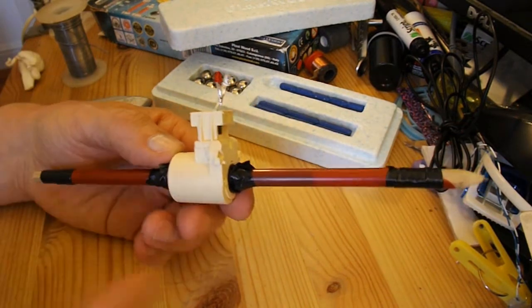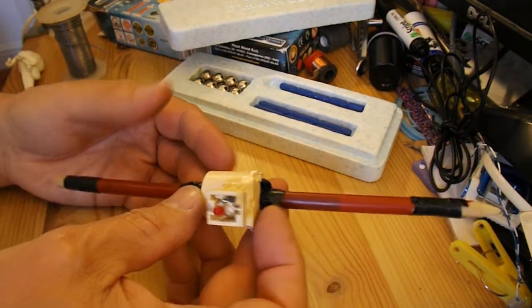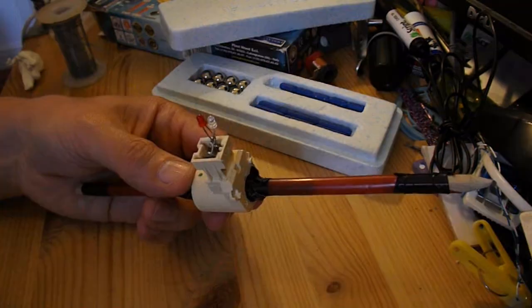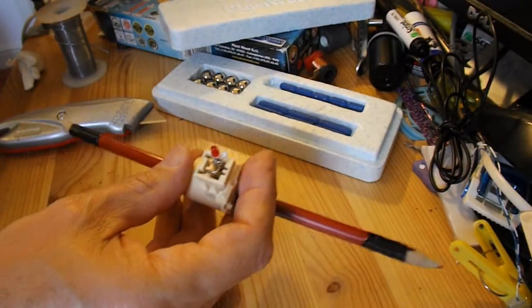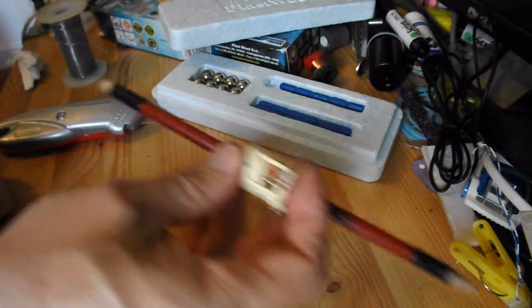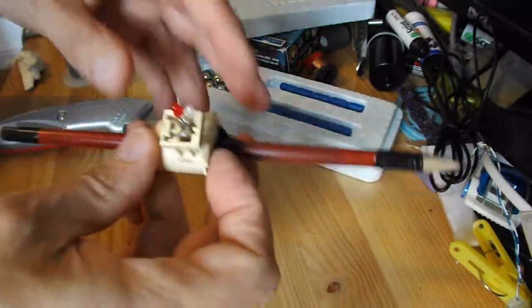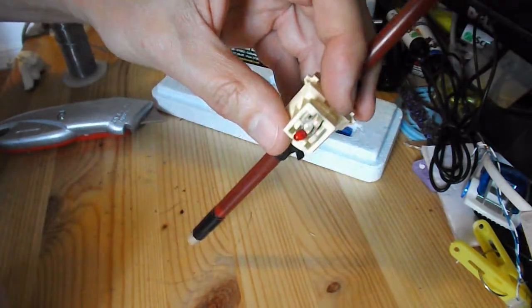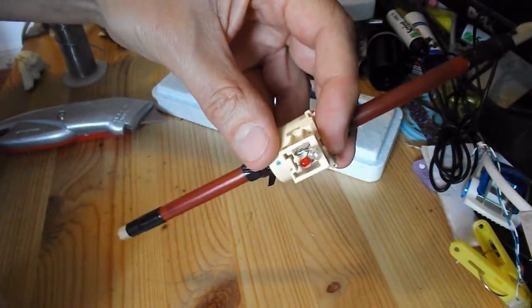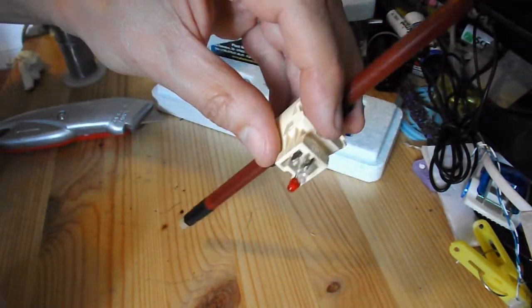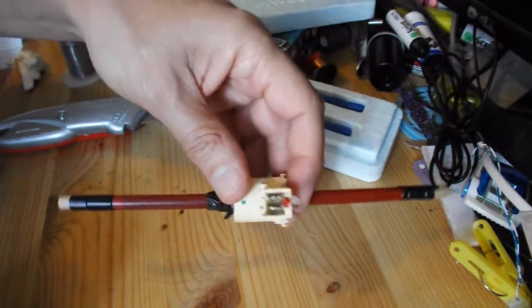OK, there we are. Bit of tape wrapped round it just to make it fit better. Turn the lights out. I think the green one's a little bit brighter than the red one. I'll just turn the other light out as well.